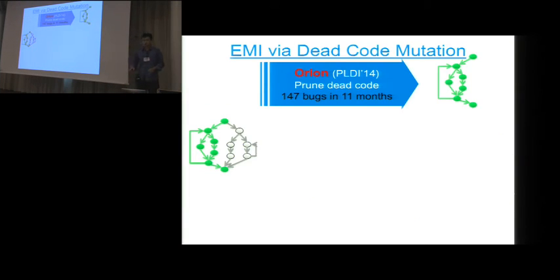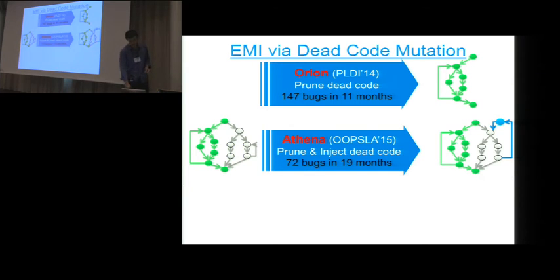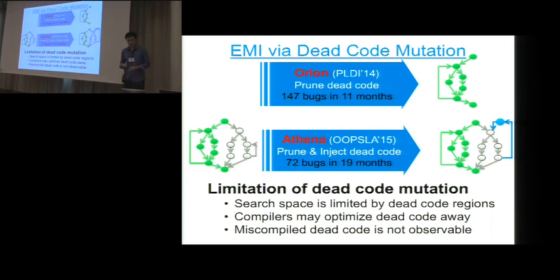Orion is pretty effective. Within 11 months we found 147 bugs which are confirmed in GCC and LLVM. Later, at OOPSLA last year we proposed Athena, which is an advanced version of Orion but it's still based on the dead code mutation. Now in Athena we not only delete statements from the dead code regions, but we also insert new code into the dead code regions.